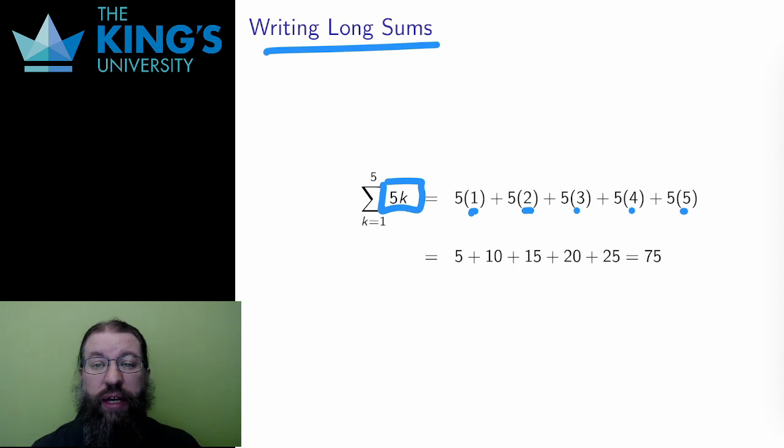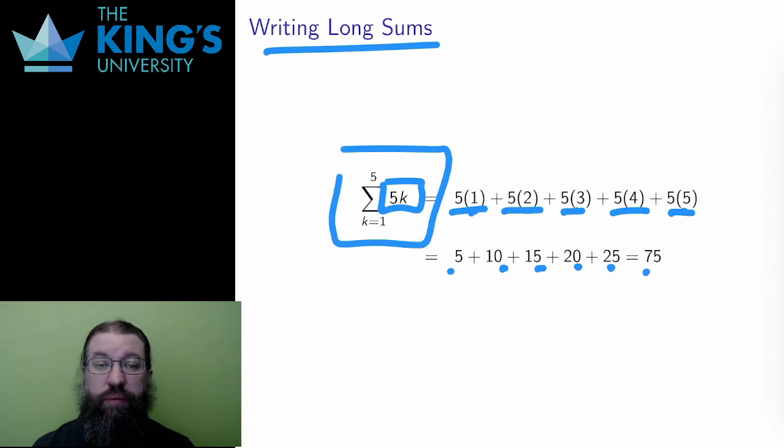Here, the term is 5 times the index. So as k goes from 1 to 5, the term is 5, 10, 15, 20, and 25. I add all these up to get 75. The value of this particular sum is 75.